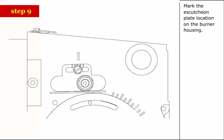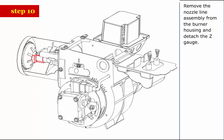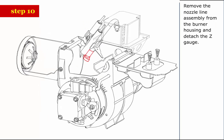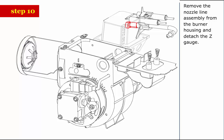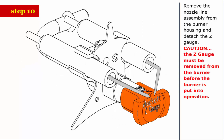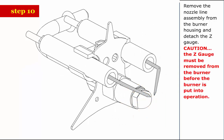Step 9: Mark the escutcheon plate location on the burner housing. Step 10: Remove the nozzle line assembly from the burner housing and detach the Z gauge. Caution: the Z gauge must be removed from the burner before the burner is put into operation.